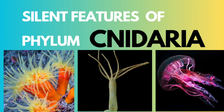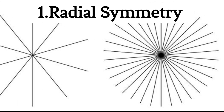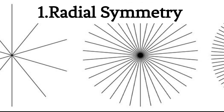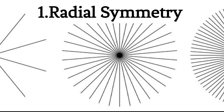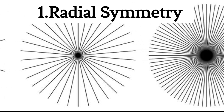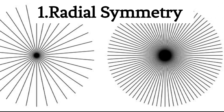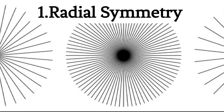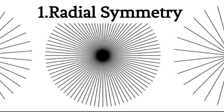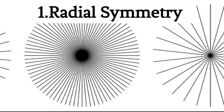The characteristic features of the phylum Cnidaria, formerly known as Coelenterata, along with examples are as follows. 1. Radial Symmetry: Cnidarians exhibit radial symmetry, which means their body parts are arranged around a central axis, similar to the spokes of a wheel.